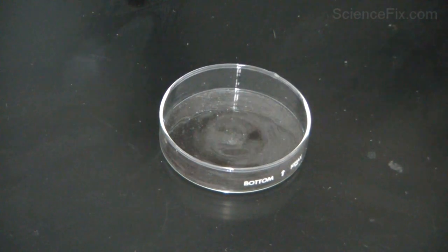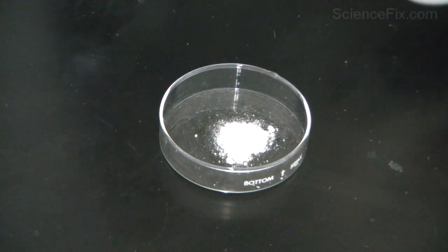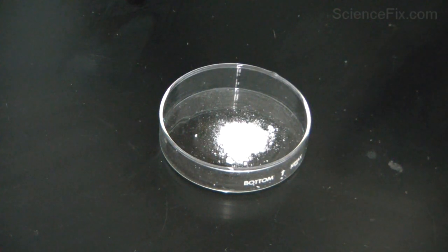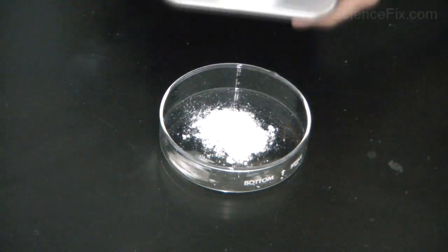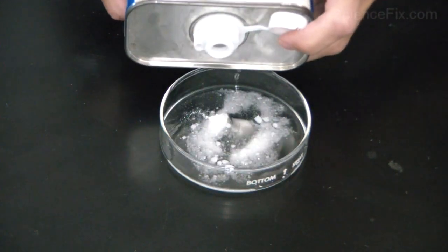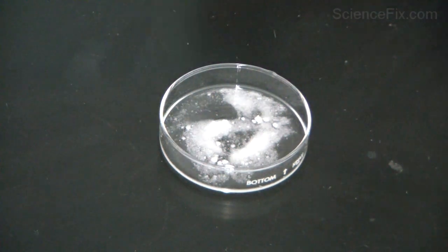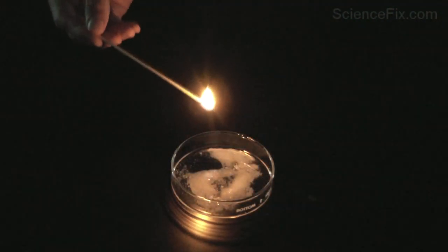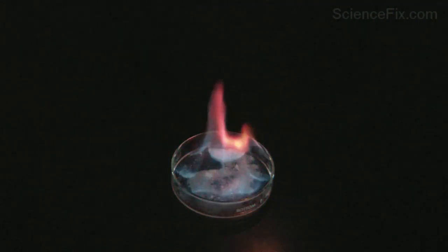Into the petri dish, I'm going to scoop a little bit of strontium chloride. Strontium chloride is just a chemical that is white in color. We're going to add some denatured alcohol to the dish, and that's going to be our fuel for burning, so we can produce a very big flame. We're going to light it.